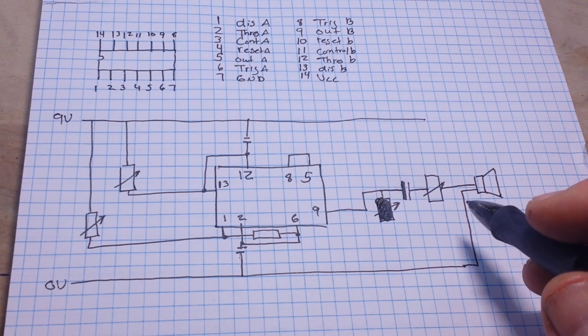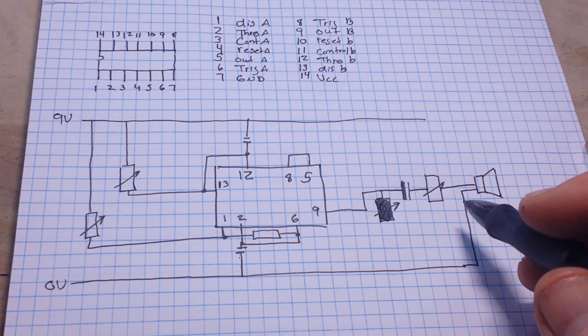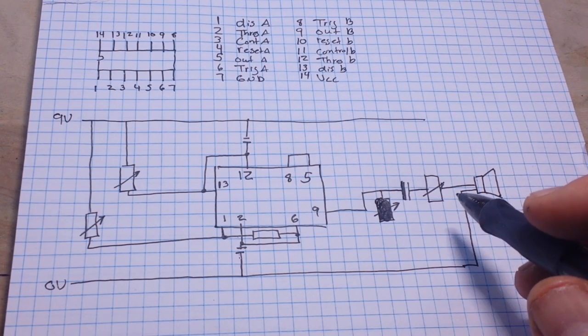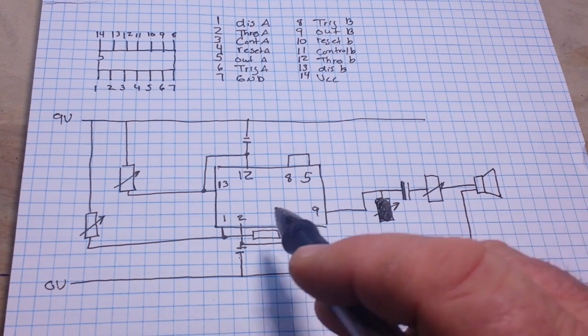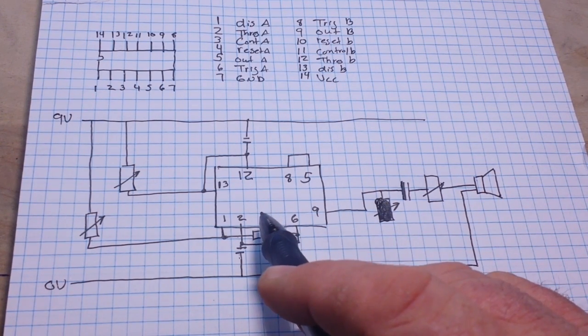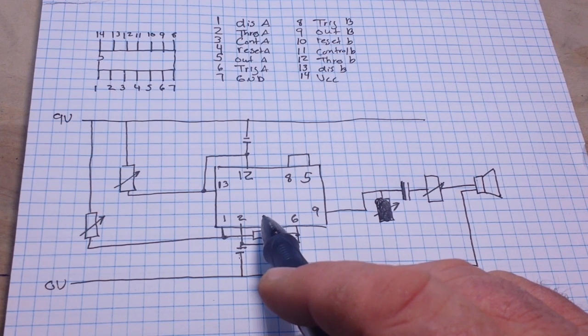Now, like I said, this is called the Atari Punk console, based on the Atari Punk console. And it uses either two 555 timers. Or in this case, I'm using a single 556, which is a dual 555.